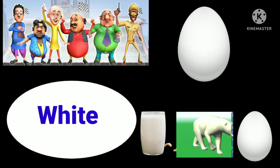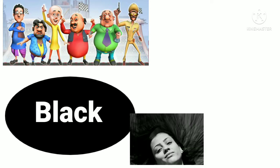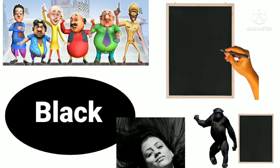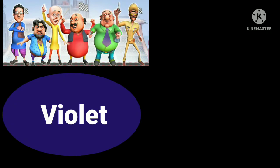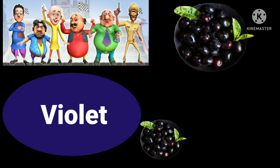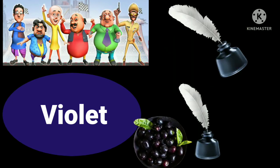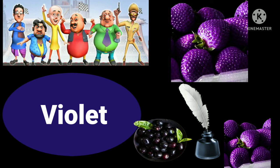Black color. B-L-A-C-K. Hair is black. Chimpanzee is black. The blackboard color is also black.